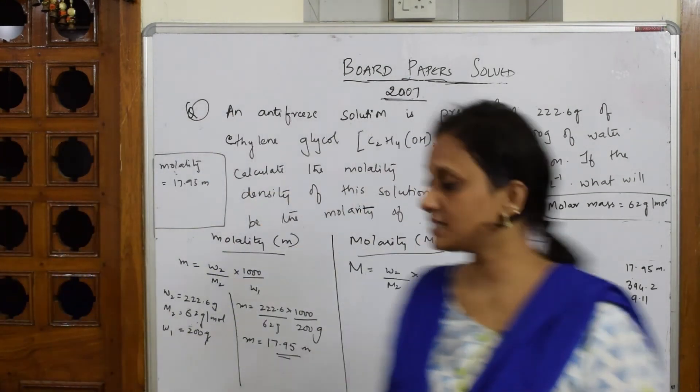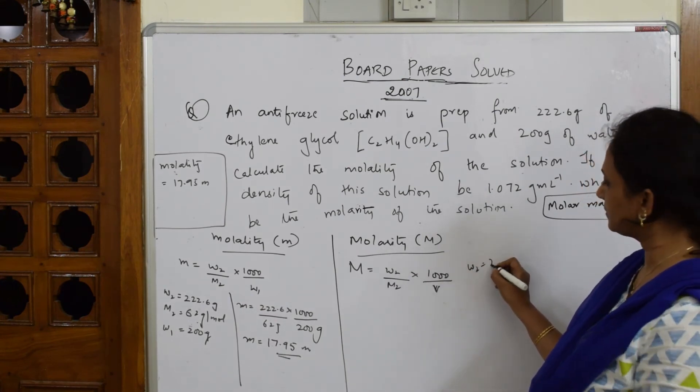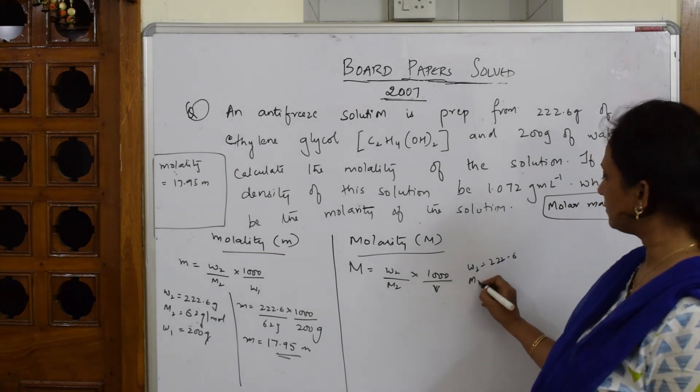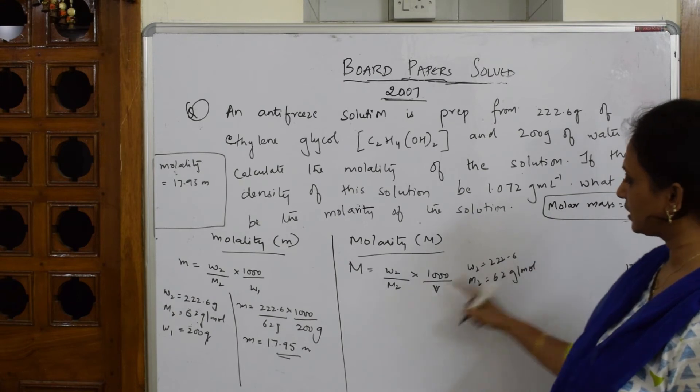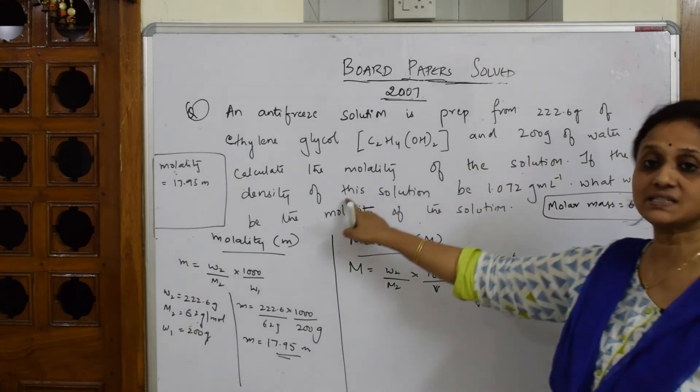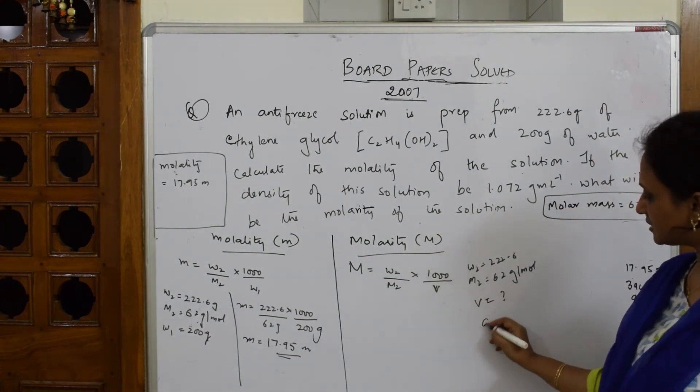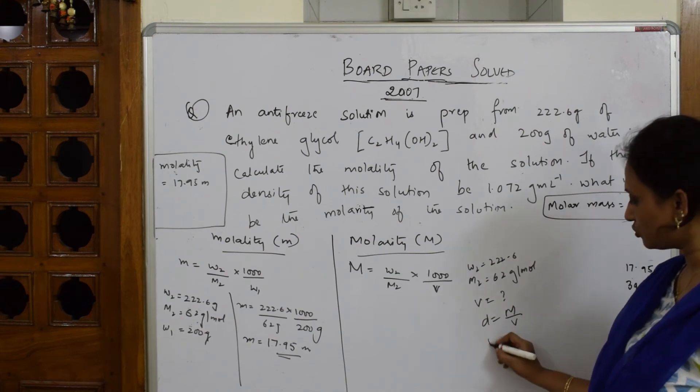Next one, I have to find out molarity. For molarity, let's see what data is given. w2 is the same, 222.6. m2 is 62 gram per mole. Volume is not given to me, but density is given, so I can use that. Volume equals mass by density.